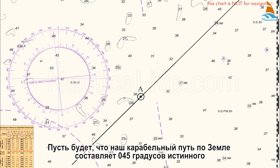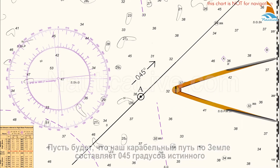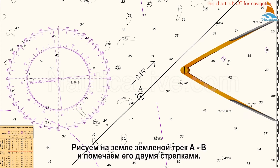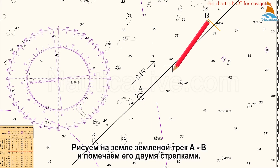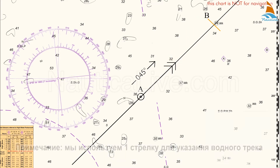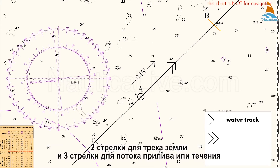We'll assume that our ground track is 045 degrees true. Draw in the ground track A to B, and mark it with two arrowheads. Note, we use one arrowhead for the indication of a water track, two arrowheads for a ground track, and three arrowheads for the tidal stream or current.